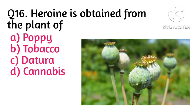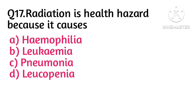Next question: heroin is obtained from the plant — option A is correct, that is poppy. Next question: radiation is a health hazard because it causes which disease? Option B is correct, that is leukemia. Leukemia is a cancer of the blood.